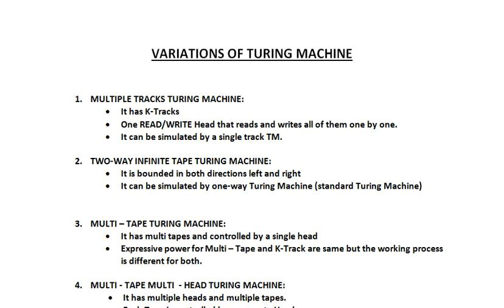We'll start with the first type: the Multiple Tracks Turing Machine. In this machine, you have multiple tracks — a finite number defined as K tracks. The key difference is that there is one read/write head that reads and writes all tracks one by one.